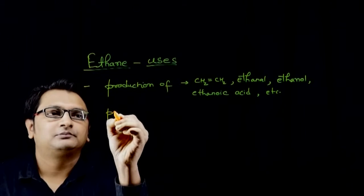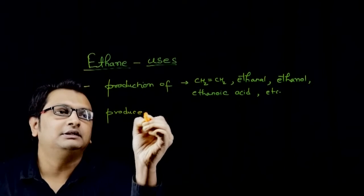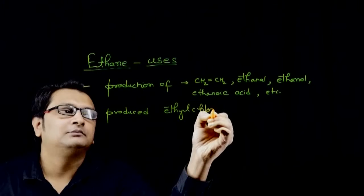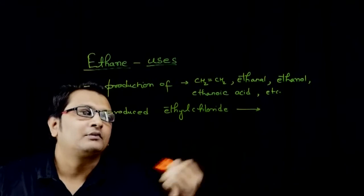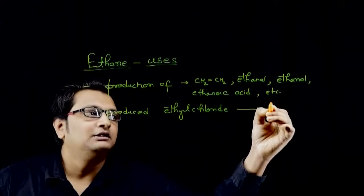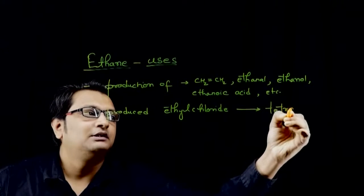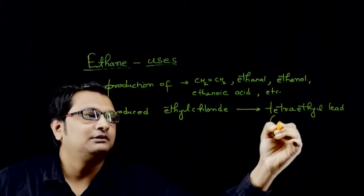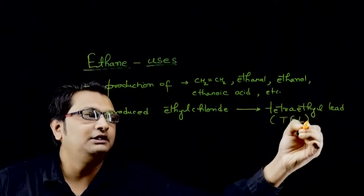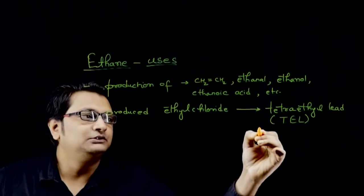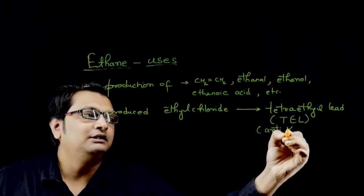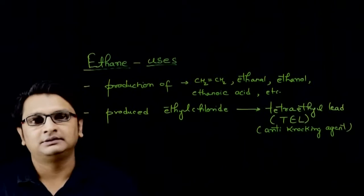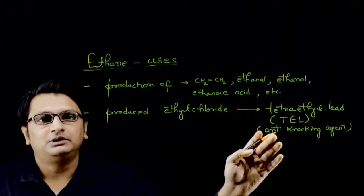Also, through ethane we can produce ethyl chloride and with the help of ethyl chloride then we produce tetraethyl lead. The short form we call TEL which is used as anti-knocking agent. Which nowadays we don't use.